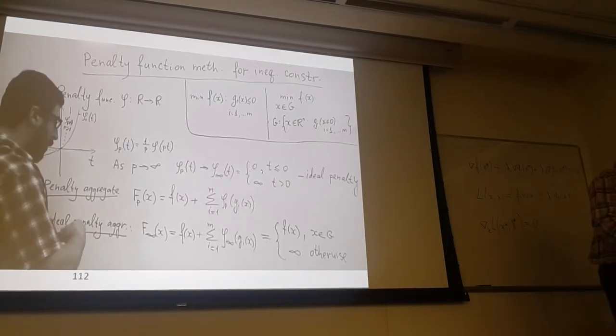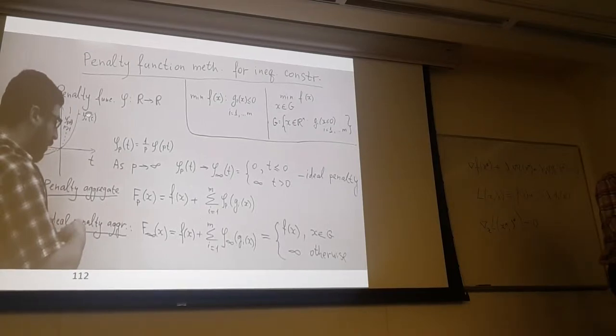You see, I built a penalty aggregate, and my intermediate solution for moderate P is really a minimizer because this way I penalize violation of constraints. So if I minimize, I am more and more close to my feasible area as my penalty becomes more and more sharp.